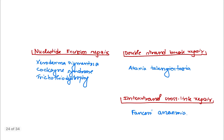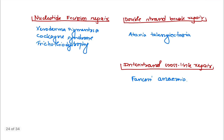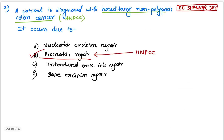Other DNA repair defects: nucleotide excision repair defect can cause xeroderma pigmentosa — with photosensitivity and increased chances of skin cancer — as well as Cockayne syndrome and trichothiodystrophy. Double strand break repair defect can cause ataxia telangiectasia, and interstrand crosslink repair defect can cause Fanconi anemia. These DNA repair defects are very important for competitive exams.